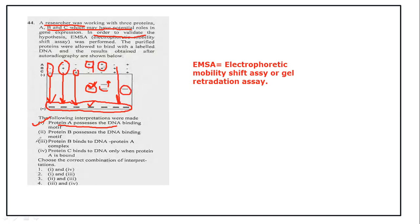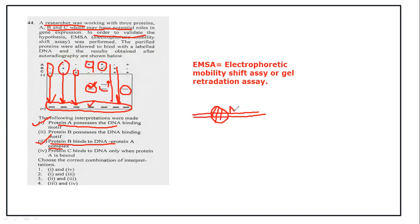When B and C are given together, the band is at control level. When A and C are given, the band shows deviation. So we can say that protein B binds to the DNA-protein A complex. If we consider the DNA strand, protein A binds to it, and protein B also has binding interaction with the protein A complex. So options 1 and 3 are the correct answers.